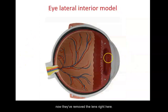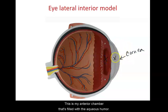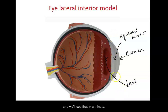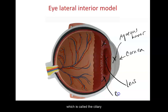Looking at another model of the eye where the lens has been removed, this is the cornea and this is the anterior chamber filled with the aqueous humor. The lens would be right here. The fluid in the anterior chamber, as well as the changing of the lens shape, is controlled by the structure called the ciliary body.